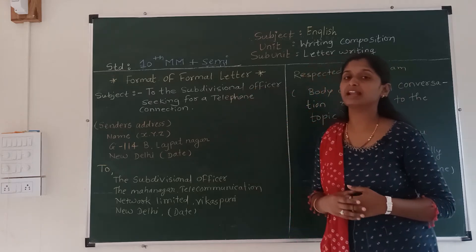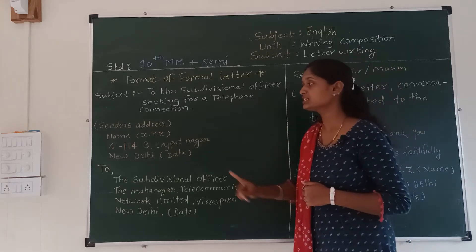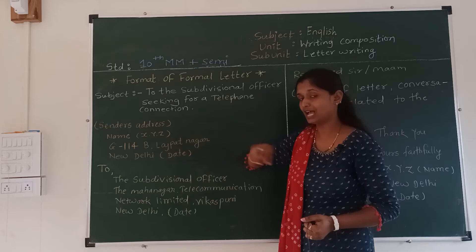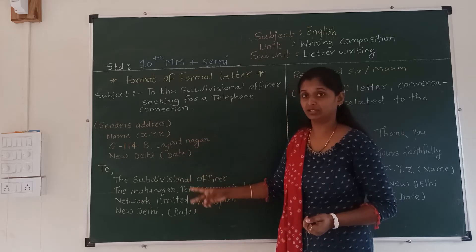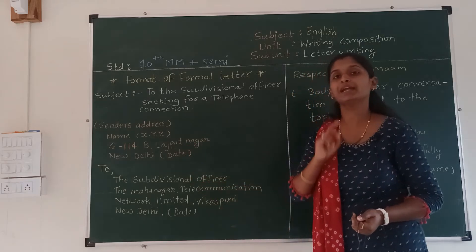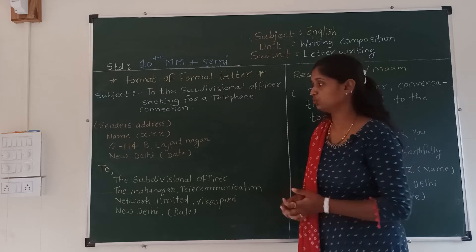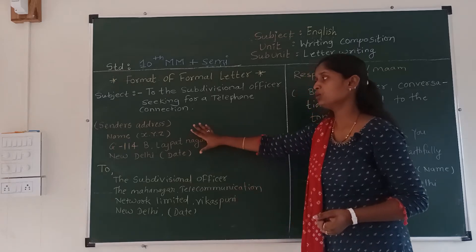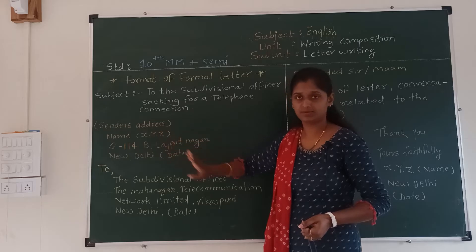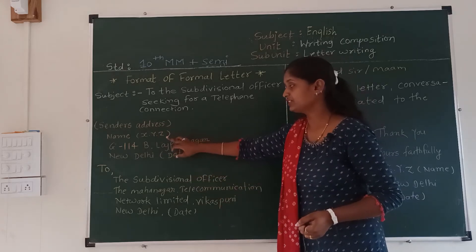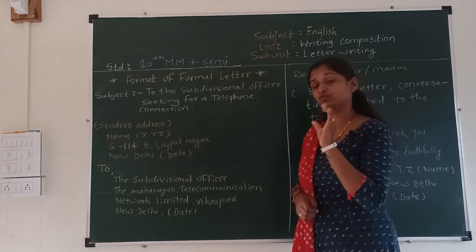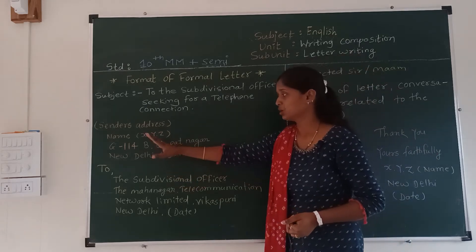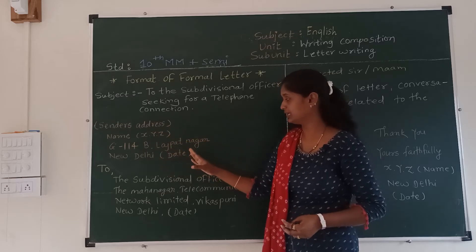When you start writing a letter, you first write the sender's address. Here, I have written X, Y, Z — so you can write your name. Then after that, your proper address. After writing the name, write the proper address. If there is any landmark, then write it. I have written here: G-114B, Lajpatnagar, New Delhi, and the date.